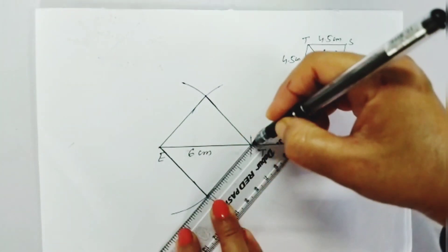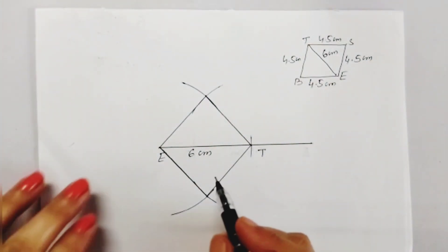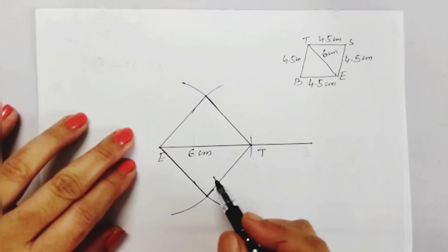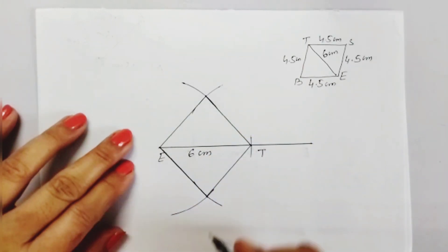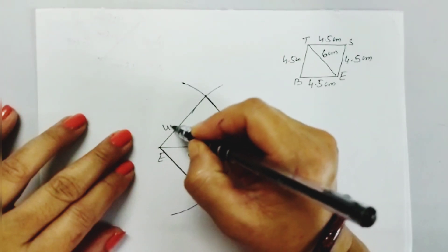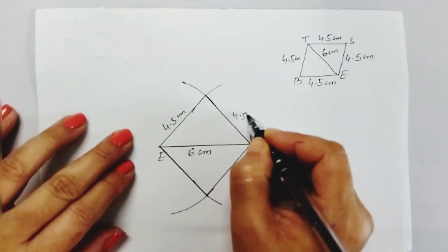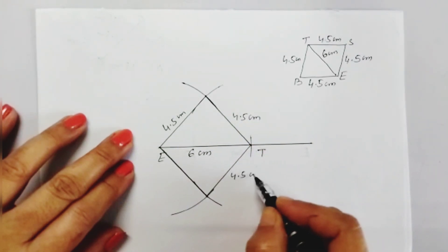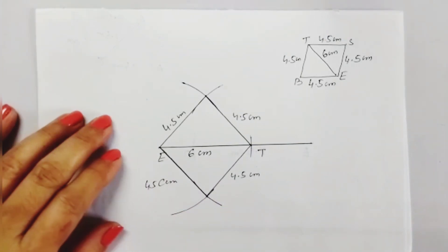So with the help of criterion 1 — when four sides and one diagonal are given — we can construct a rhombus, a parallelogram, and also a general quadrilateral. In this way we can use the first criterion to construct the quadrilateral.